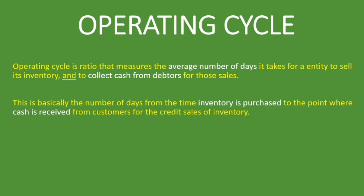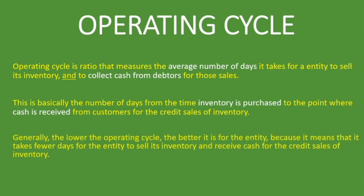We looked at the cash conversion cycle in our other lesson — you'll find the link in the description below. The only difference between the two is the starting point. Here, with the operating cycle, it's when inventory is purchased. But the cash conversion cycle is from the time you pay your creditors for the inventory. Generally, the lower the operating cycle, the better it is for the entity, because it means it takes fewer days to sell inventory and receive cash for the credit sales of inventory.